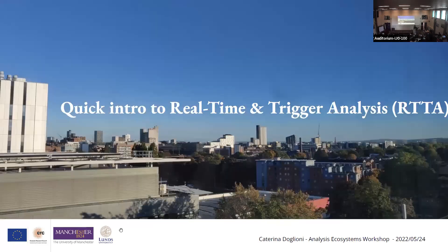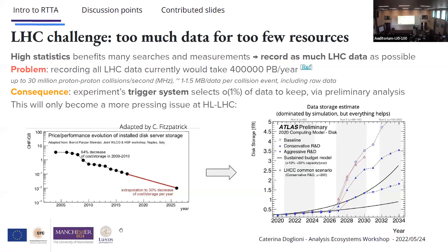This is first a very quick intro because I think most people here are pretty familiar with what this is. We do have too much data for too few resources — that's always the same problem. We always want high statistics or unbiased selections. We try to record as much LHC data as possible, and this means not just after the trigger and how to process it, but also before the trigger. We've all seen these articles about recording all the LHC data taking 400,000 petabytes a year, and articles saying these people are throwing away 99% of their data.